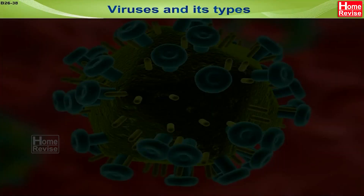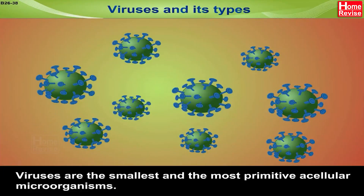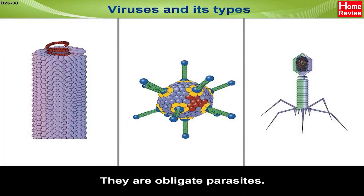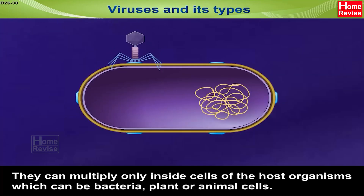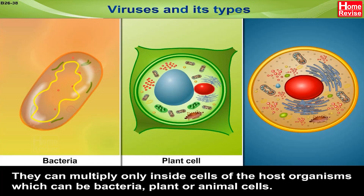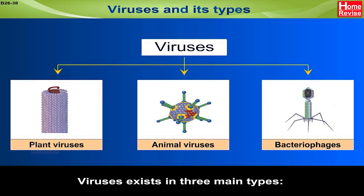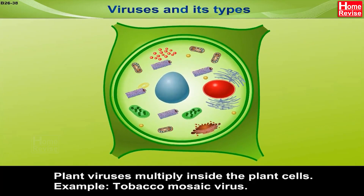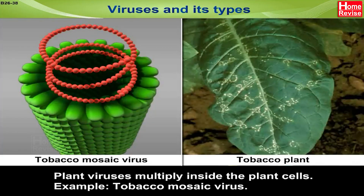Viruses are the smallest and most primitive acellular microorganisms. They are obligate parasites. They can multiply only inside cells of the host organisms, which can be bacteria, plant or animal cells. Viruses are of three types: plant viruses, which multiply inside plant cells — for example, tobacco mosaic virus.